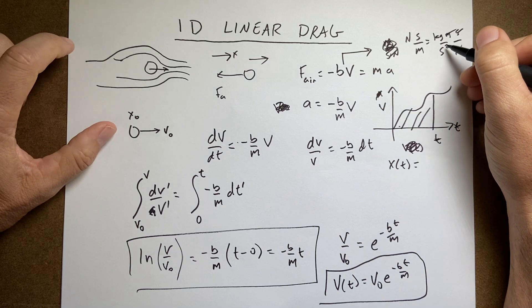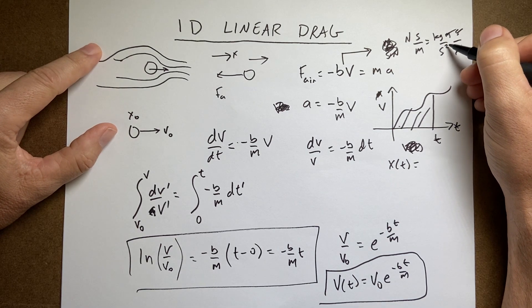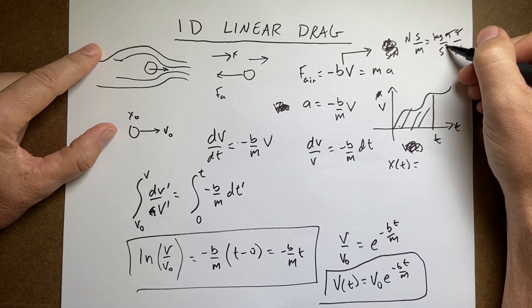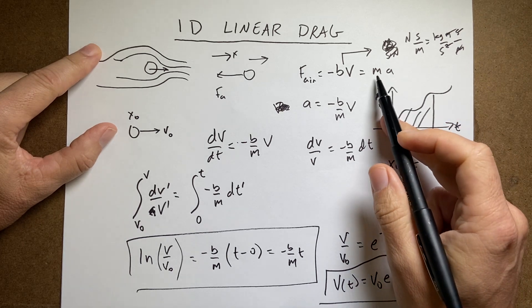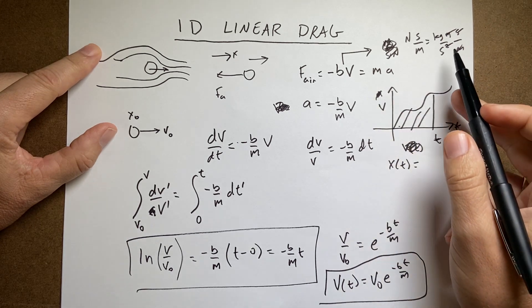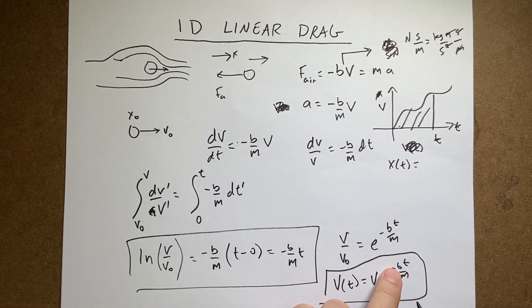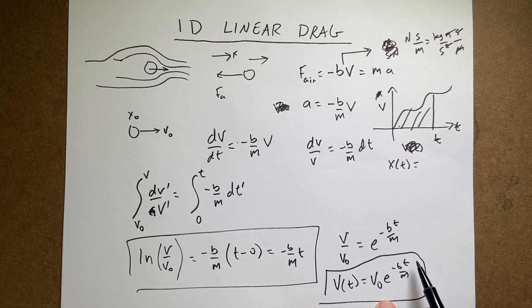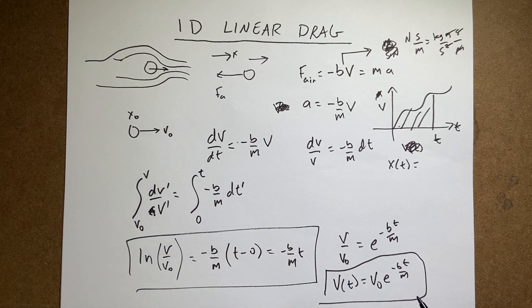And I get, oh that's right. And I get a kilogram, kilograms per second. But then I divide by the mass, so I get kilograms per second for B. And then I divide by the mass, I get one over seconds. And then I multiply by T, I get a unitless quantity. So that's a good check.